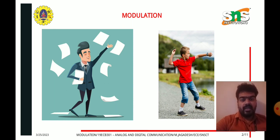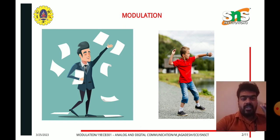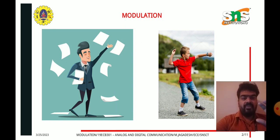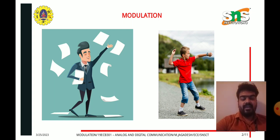From this we can understand what modulation is. The paper contains the information that needs to be sent to the destination point, and the stone is used to carry that information to the destination. At the destination point, we don't want the stone — only the information is needed. This is called modulation.